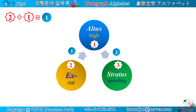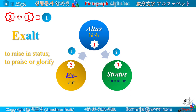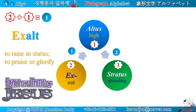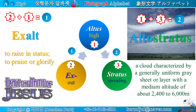Star number two and star number one make the word exalt. Exalt means to raise in rank or status, to praise, honor, or glorify — exalt the name of Jesus. Star number one and star number three make the word altostratus. Altostratus is a cloud characterized by a generally uniform gray sheet or layer with a medium altitude of about 2,400 to 6,000 meters.